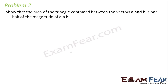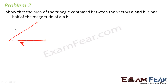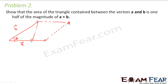Let us look at the next problem. It says: show that the area of the triangle contained between the vectors A and B is one half of the magnitude of A cross B. This is a problem related to the vector product of vectors. Let us suppose we have a vector A and another vector B. We draw a perpendicular and make a parallelogram. The angle between A and B is theta.